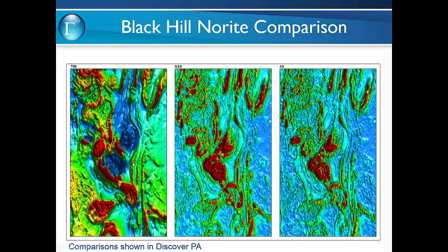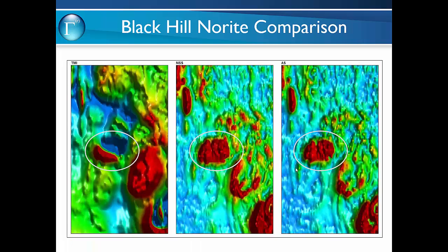Here's a comparison of the total magnetic intensity, the normalised source strength as computed by Model Vision, and the analytic signal. First impressions — they look very similar. When you look closer you will start to see that the geological continuity of the normalised source strength is in general much better. Here's the example of the Black Hill Norite anomaly — a reversed anomaly. The analytic signal tends to break up a lot more across the anomaly, whereas the normalised source strength is generally more coherent across the target.